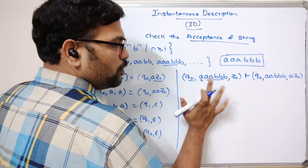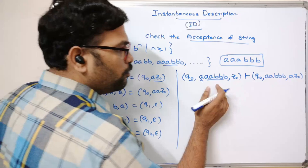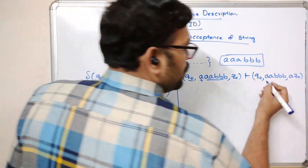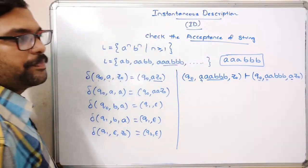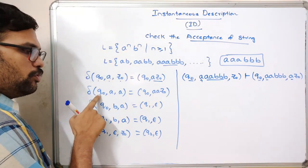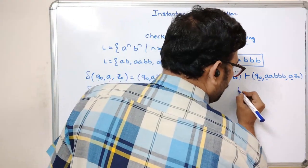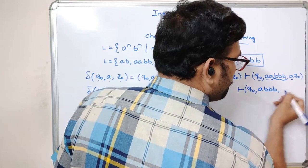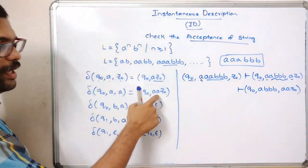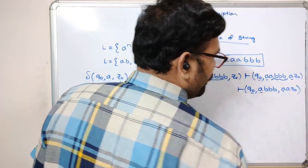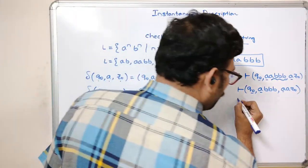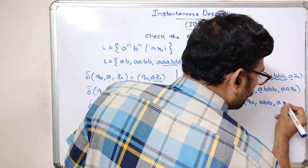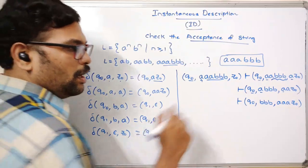After processing each 'a', the remaining input and stack are updated. After the second 'a', remaining input is 'abbb' and stack is 'aaz0'. After the third 'a', remaining input is 'bbb' and stack becomes 'aaaz0'. Now q0 on 'b' with stack top 'a' — since epsilon is used, this is a pop operation and the state changes to q1.